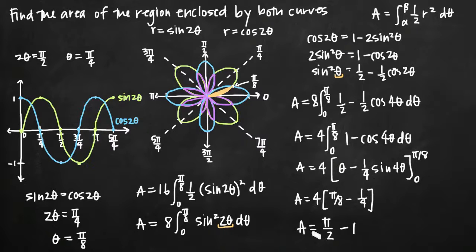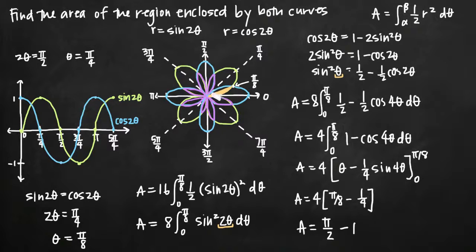Distributing the 4: 4 × π/8 = π/2, and 4 × (−1/4) = −1. So the total area is π/2 − 1. That's the area of all 8 pink leaves, since we found half of one petal and multiplied by 16 to get the total. I hope you found that video helpful — please like and subscribe to be notified of future videos.